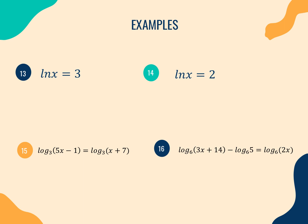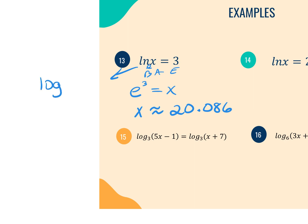Example 13: natural log equation. Since the base on LN is E, this spells BAE. Convert to exponential: E to the third power equals X. Hit the second LN button on your calculator and raise to the third power — X equals 20.086 rounded to three decimal places. Alternatively, you could change it to log base E of X equals 3 and apply the same method.